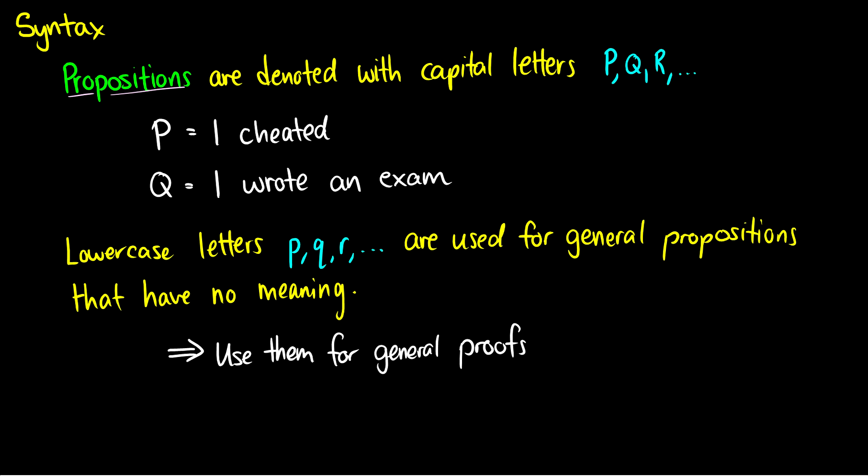So for instance, P is I cheated and Q is I wrote an exam. So those are propositions. Lowercase letters p, q, r are just general propositions that don't have any specific meaning. And we'll be using these for proofs. So capital letters will have English translations, while lowercase letters will not.